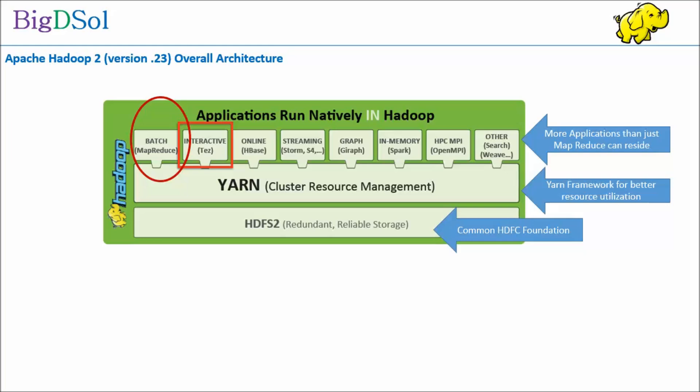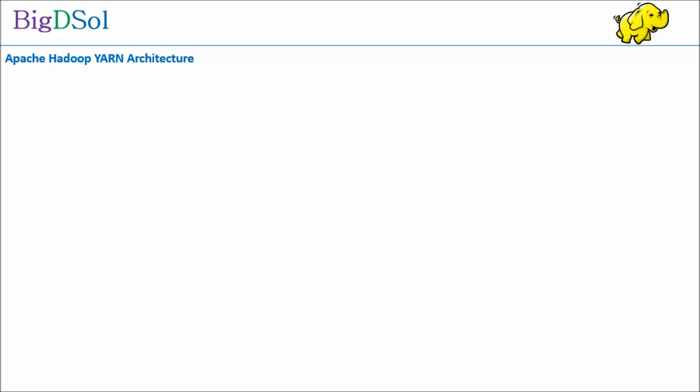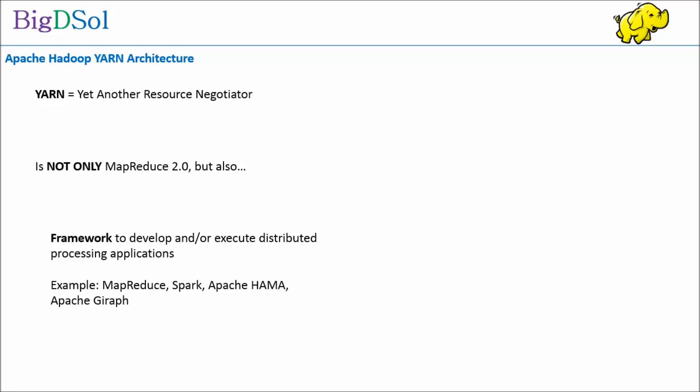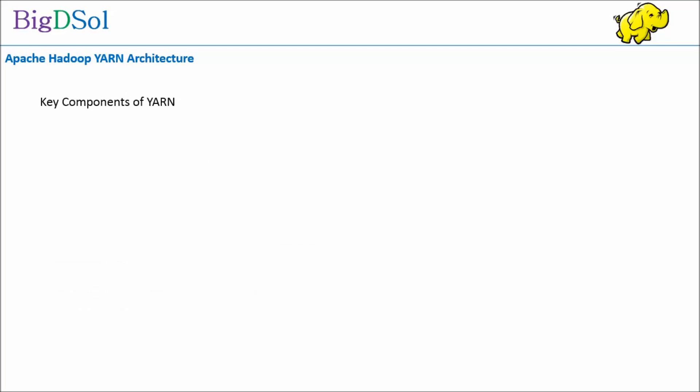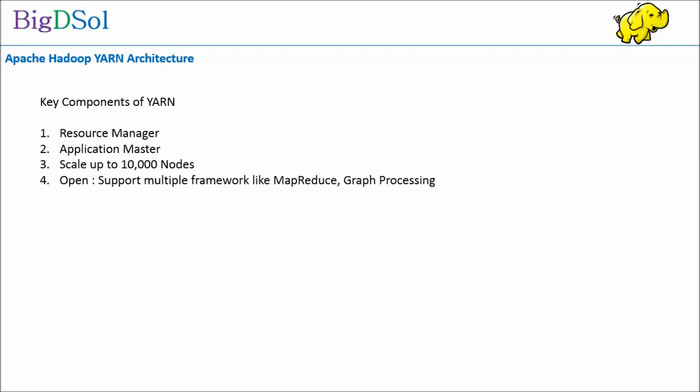A key component of Hadoop 2 is YARN — Yet Another Resource Negotiator. It is not only MapReduce 2.0, but also a framework to develop and execute distributed processing applications, such as MapReduce, Spark, Apache Hama, and Apache Giraph. Key components of YARN include the Resource Manager, Application Master, and it scales up to 10,000 nodes. It is open and supports multiple frameworks like MapReduce and graph processing.